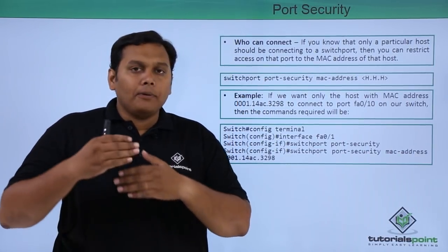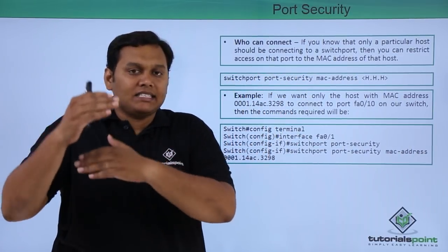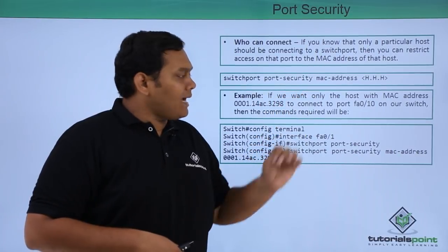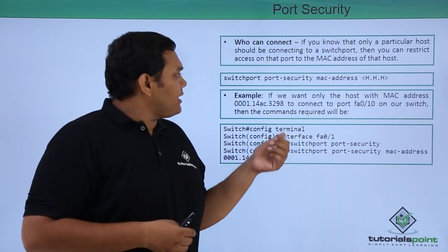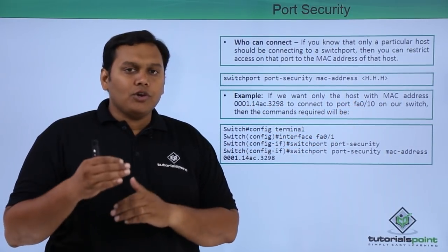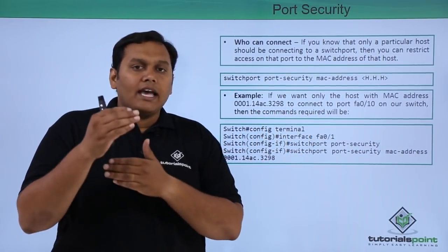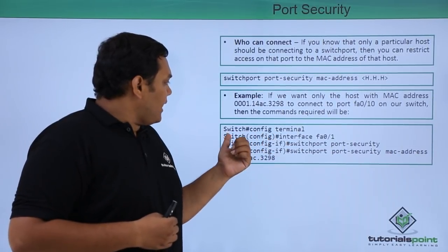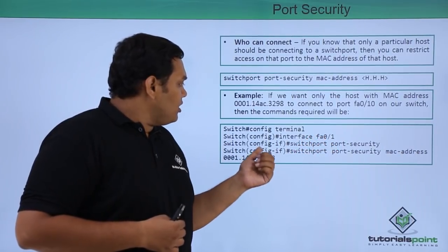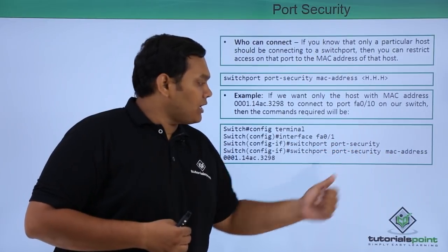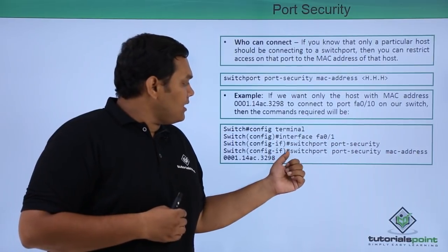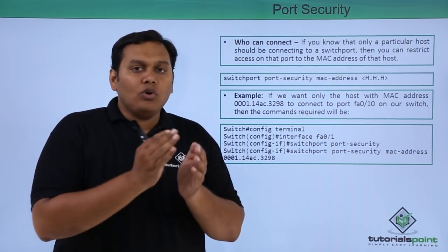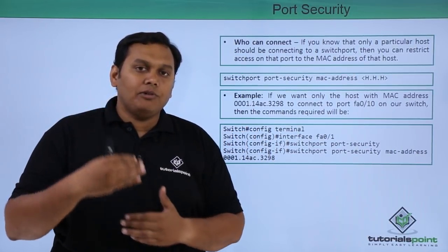The first option is 'who can connect.' If you know a particular host should be connecting to a switch port, you can restrict access on that port by specifying the MAC address of the host. The syntax is: 'switchport port-security mac-address H.H.H'. For example, if you want only the host with MAC address 0001.14AC.3298 to connect to port FA1/0, the commands required are: enter configuration terminal, interface FA0/1, then 'switchport port-security' and 'switchport port-security mac-address 0001.14AC.3298'. Only the host with that MAC address will get access and the switch will work normally.